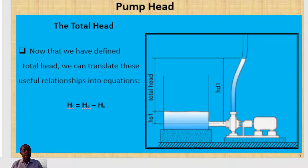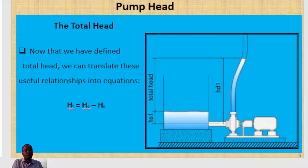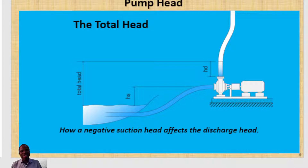Now that you know what total head is all about, you can translate it into an equation: the total head is the difference between the pump head at the discharge end of the pump — referred to as HD — and your suction tank level. That is your total head.